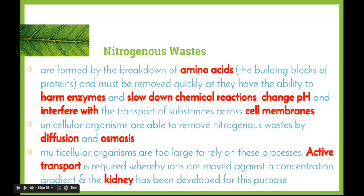Unicellular organisms — such as bacterial cells and paramecium — are able to remove nitrogenous wastes by the simple processes of diffusion and osmosis. Because they are extremely small, they have a large surface area to volume ratio, so substances are able to move in and out quite freely. Multicellular organisms such as ourselves are much too large to rely on these processes, so we can't simply have diffusion of substances out of our body — we need other processes in place.